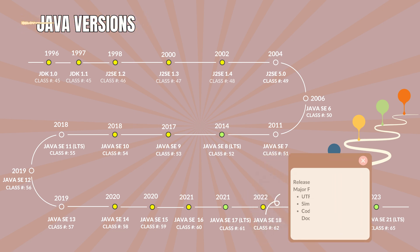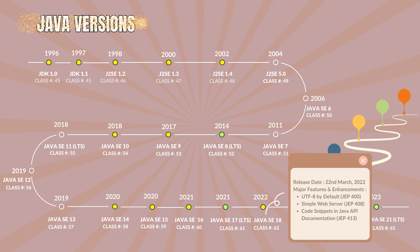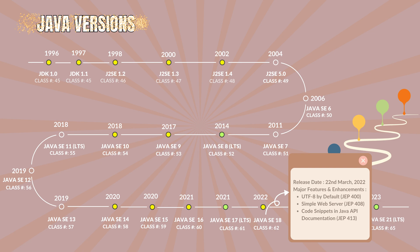Java 18.0 with the class file version 62. It was released on 22nd March 2022. The major features and enhancements are UTF-8 by default JEP 400, Simple Web Server JEP 408, and code snippets in Java API documentation JEP 413.